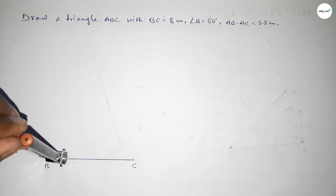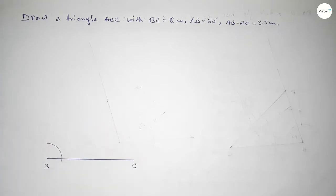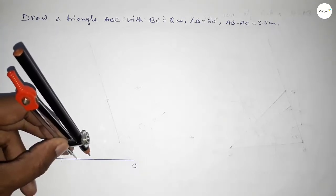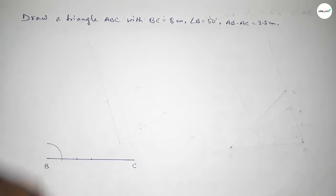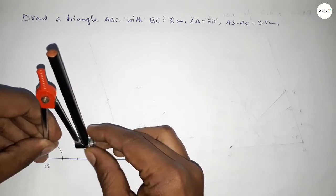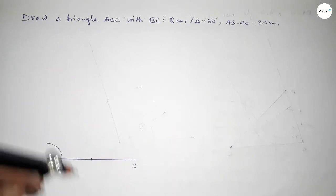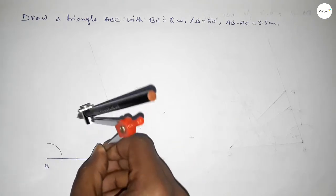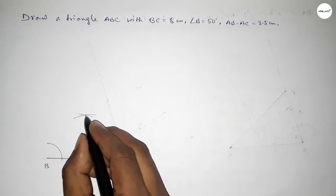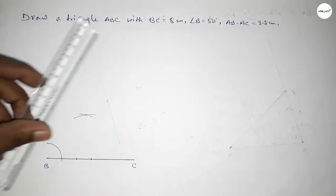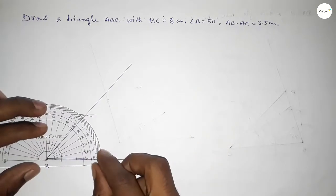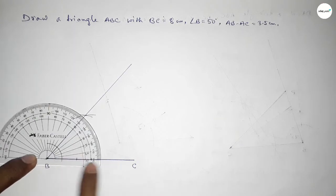Taking any length and drawing an arc using the compass, then with the same length placing the compass and cutting here, and again with the same length cutting here. Now taking the distance from point B to this intersection point, placing the compass and drawing an arc, then cutting with the same length so both curves intersect at a point. Joining this point gives the 50 degree angle line.